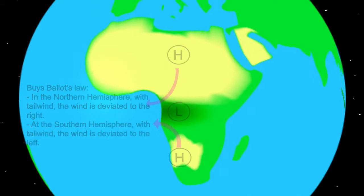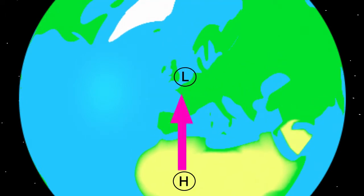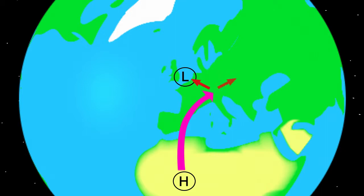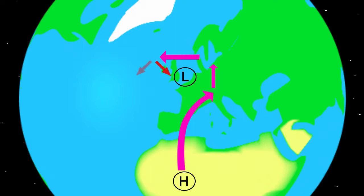But what happens then? If the wind in the northern hemisphere wants to flow from a high pressure area to a low pressure area, a deviation will take place to the right and it arrives southeast of the low pressure area. At that point the air wants to flow to the low pressure area but the wind also has a deviation to the right, so the air particle flows to the north and arrives northeast of the low pressure area. Now the air still wants to go to the low pressure area but the wind still has a deviation to the right. The air flows to the west and arrives northwest of the low pressure area. The air still wants to flow towards the low pressure area but here too the air has a deviation to the right, so the air flows to the south and ends up southwest of the low pressure area.